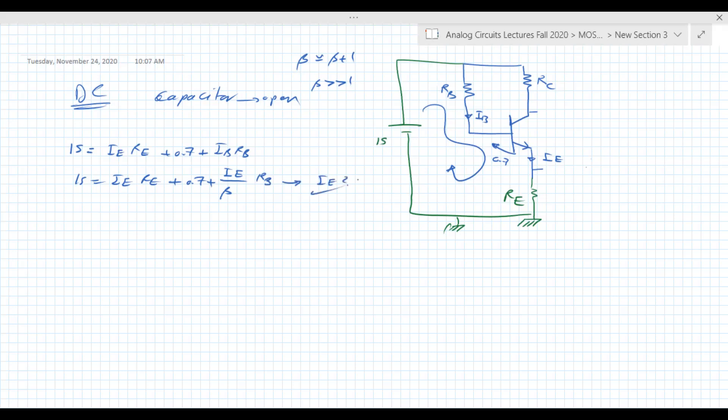You get IE. After you get IE, you can determine re small. You can determine re by VT over IB, and IB is just IE over beta. Or this is equal to re multiplied by beta. They all have relation with each other.